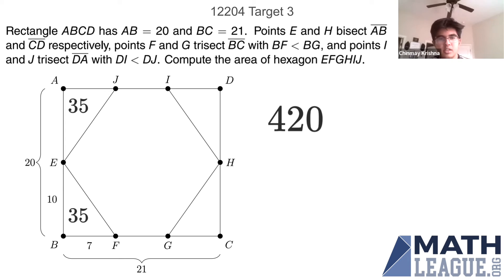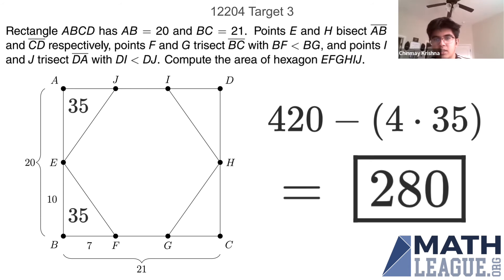And then similarly all four of the triangles would have the same area, so it'd be 420 minus 4 times 35, which is equal to 280. So that's our answer to target number three.